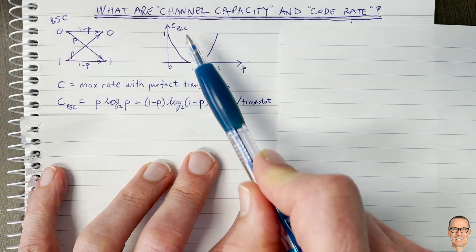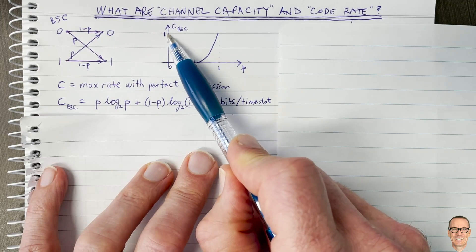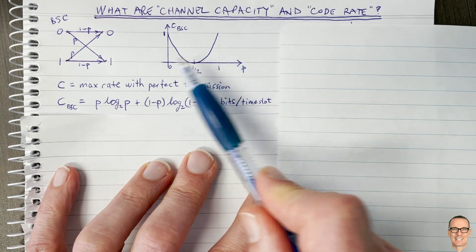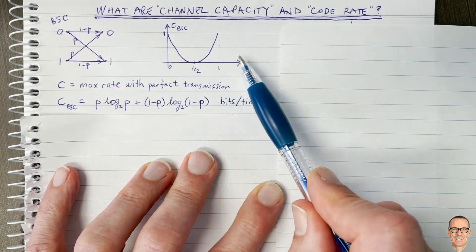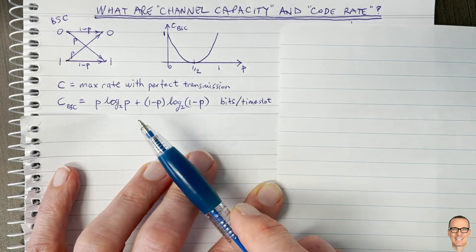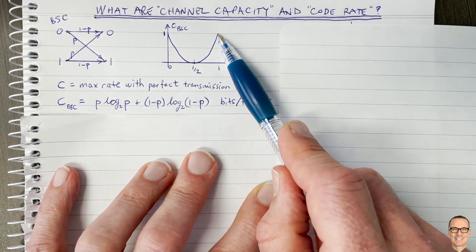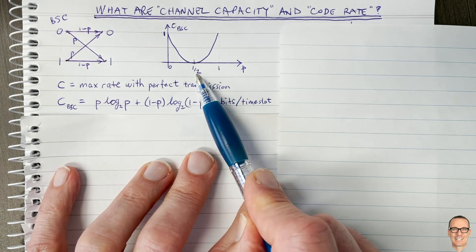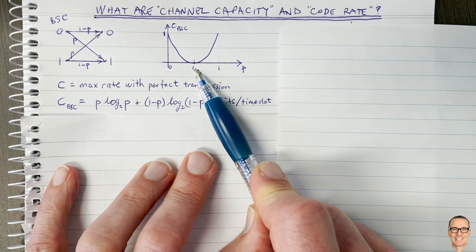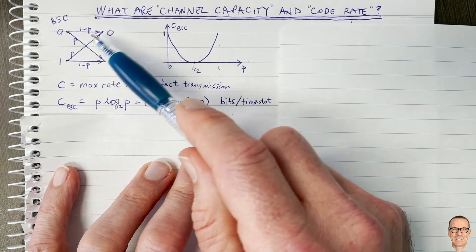On the horizontal axis is the probability of error p; on the vertical axis is the capacity. If the probability of error is zero, naturally you get one bit coming out reliably every time you put one bit in — that makes sense. If p equals one, every bit comes out in error, but if you know that's happening you can simply invert the received bits to recover the original signal. So even with errors at probability one, your capacity is still one. Interestingly, if the probability of error is one half, the capacity is zero — no bits can be reliably transmitted at any rate.